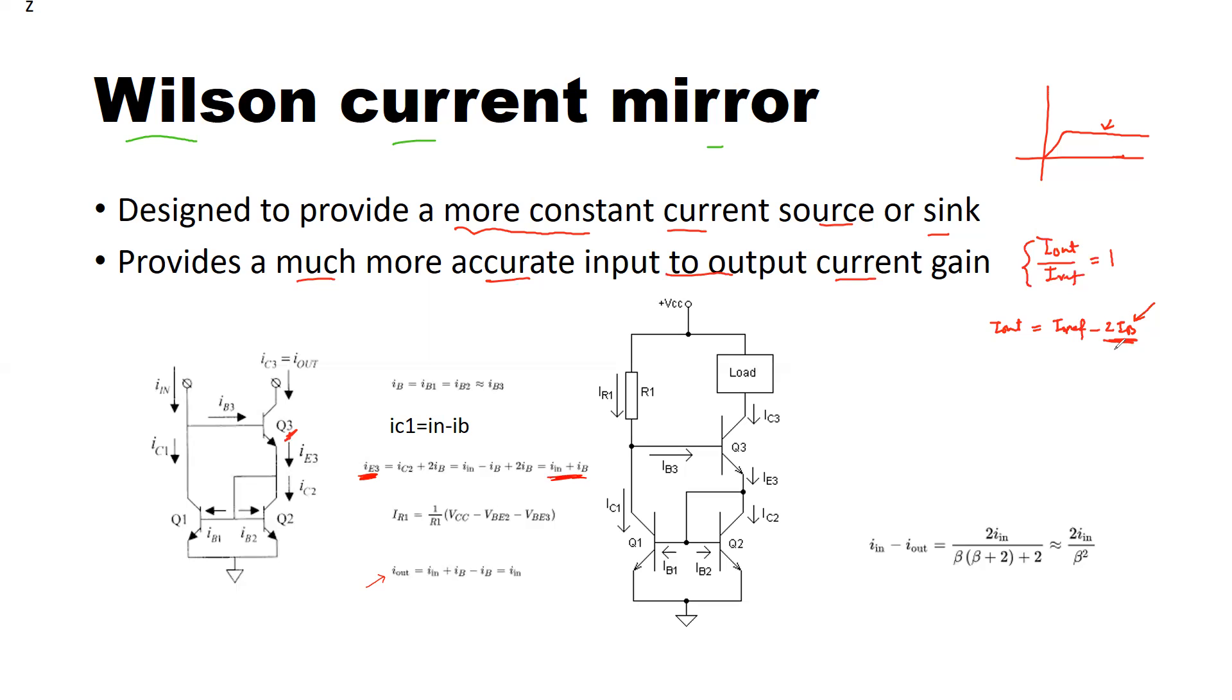In case of MOSFET-based current mirrors, that's not applicable because the MOSFETs' gate currents are ideally zero—in fact, they don't exist. So we are talking in the context of BJTs. Coming back to Wilson current mirror, it helps us reduce this error, and finally we got this expression